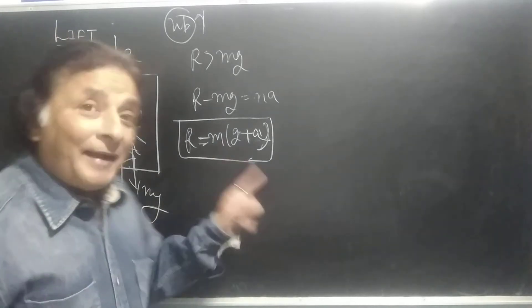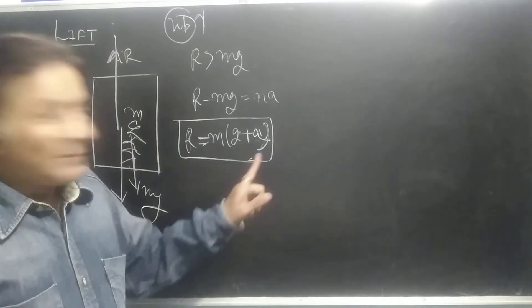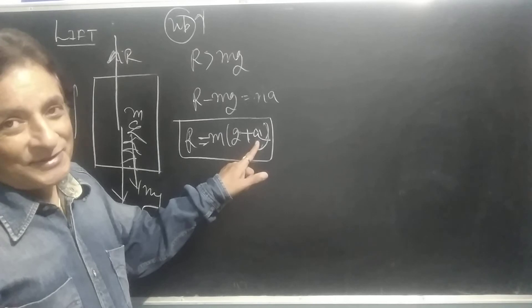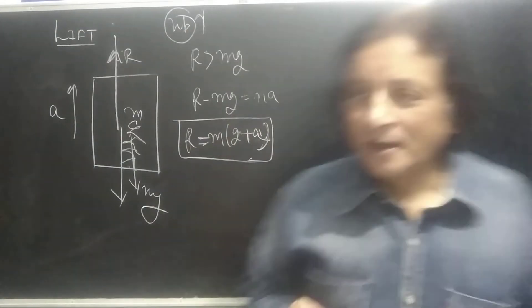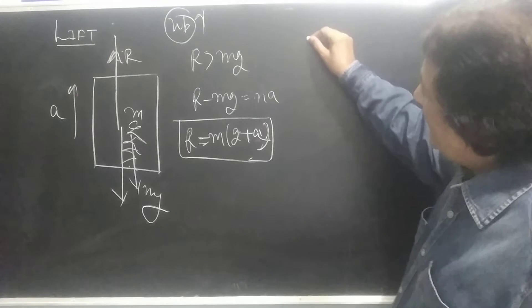If you are going at uniform velocity, then the acceleration will be zero, then the weight will remain the same. Now if you are in the lift going downward with acceleration.